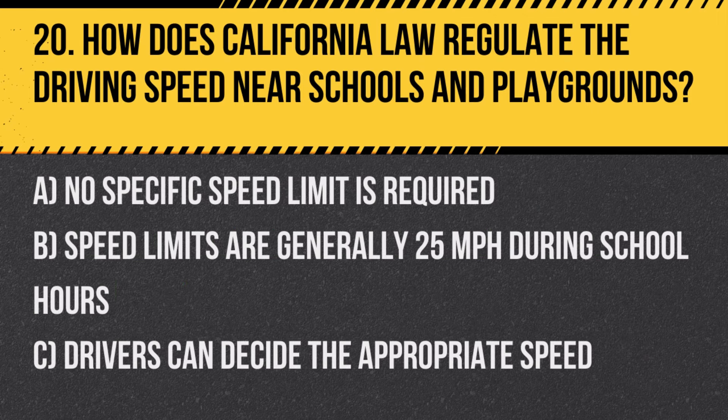Question 20: How does California law regulate the driving speed near schools and playgrounds? A. No specific speed limit is required. B. Speed limits are generally 25 miles per hour during school hours. C. Drivers can decide the appropriate speed. Answer: B. Speed limits are generally 25 miles per hour during school hours. This reduced speed limit helps ensure the safety of children around schools.